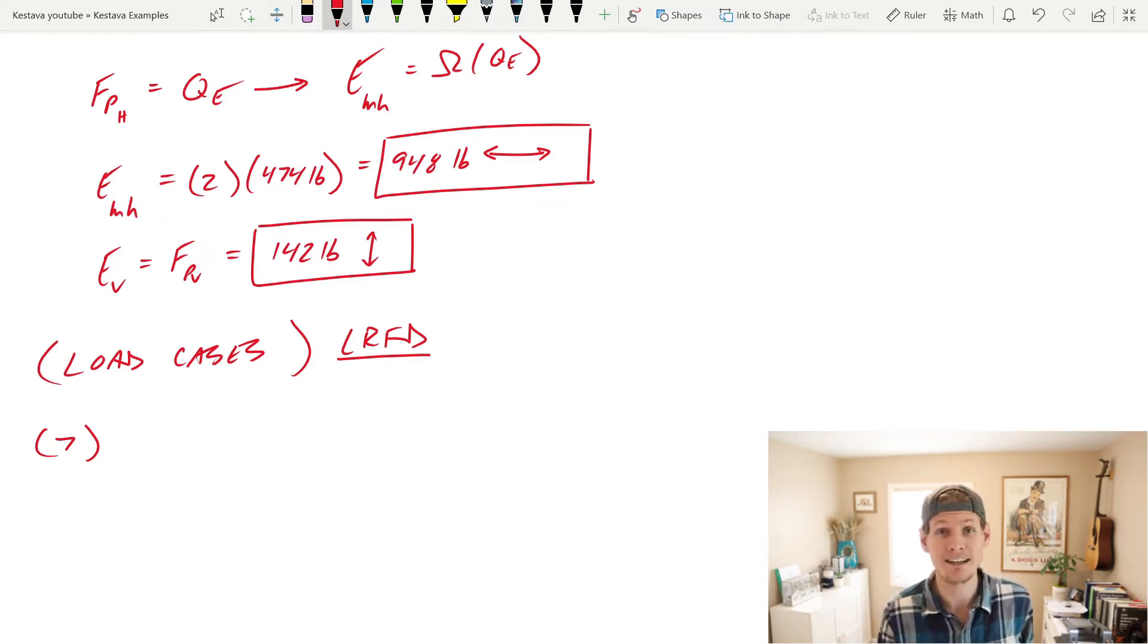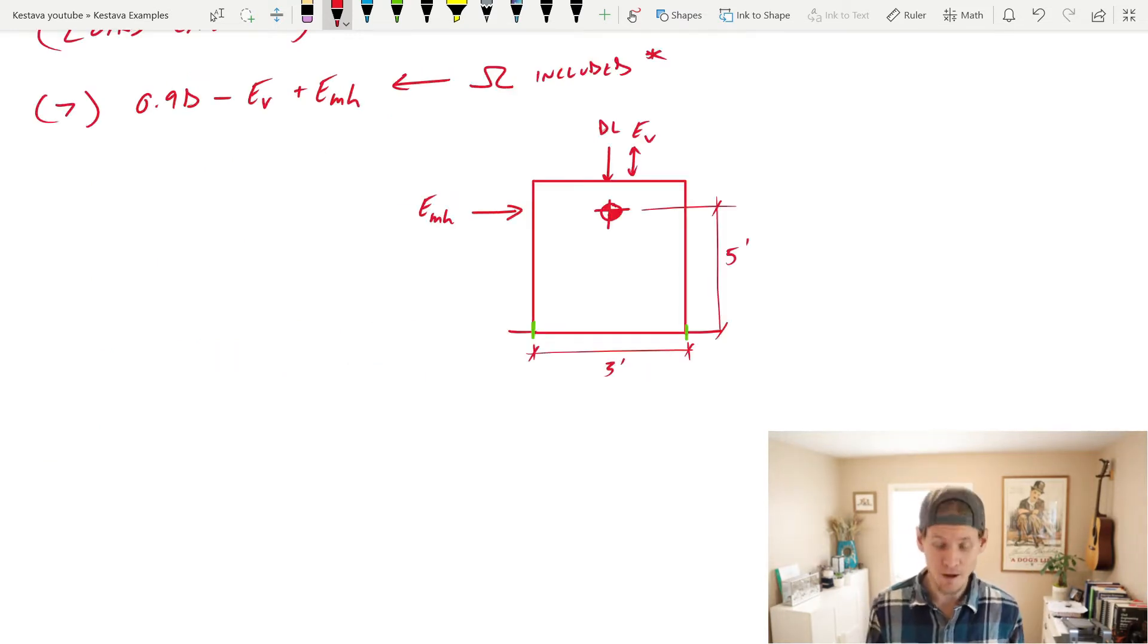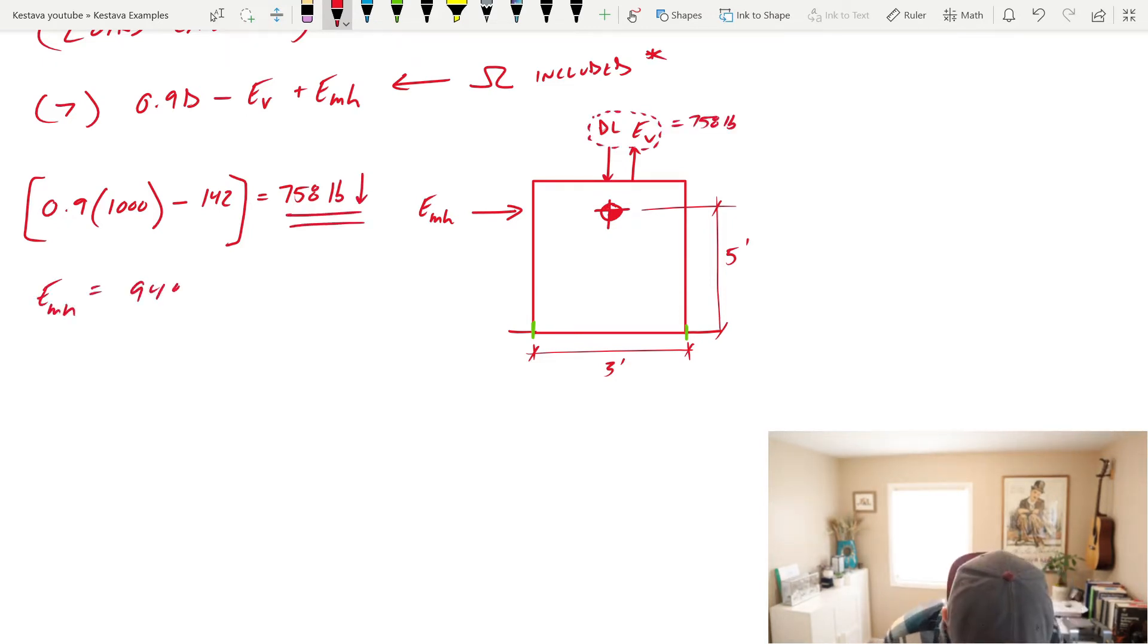So that would then result in the highest tensile force that is acting on an anchor. And you'll see why here. And here's our diagram all set up with our loads relatively applied to it. We just need to apply the actual values to them. 0.9, we know our dead load is 1,000 pounds. That's the weight of our unit. But we need to subtract out E sub V from that. So in this case, we can delete that and actually just have it pointing upward because we're subtracting. So we're saying that the vertical component of the seismic demand is actually lifting that unit up, which is making it lighter, which is making the condition worse for overturning. EV is 142 pounds. It's going to equal a net dead load of 758 pounds downward. And then EMH is 948 pounds.